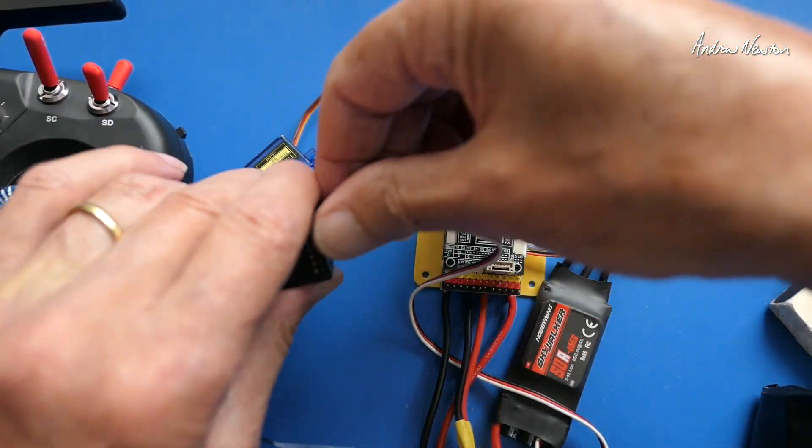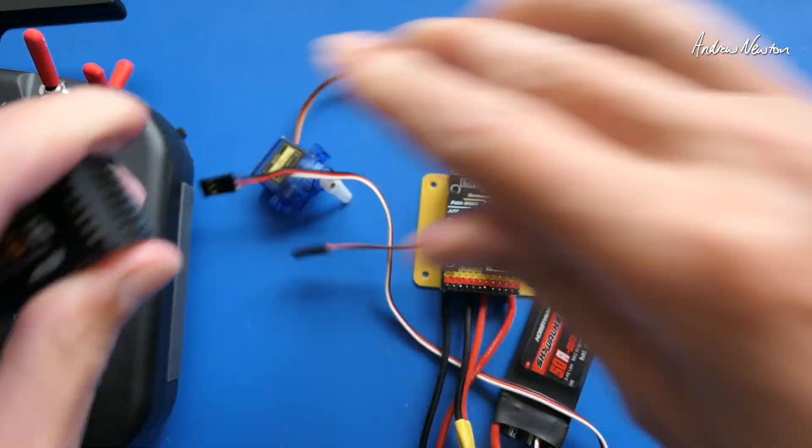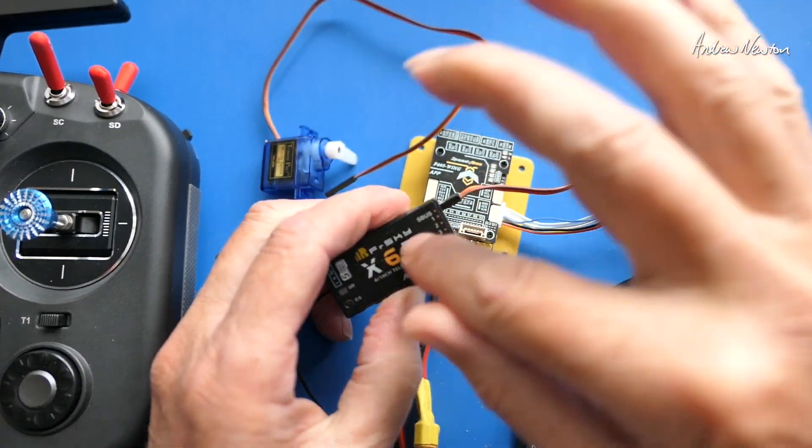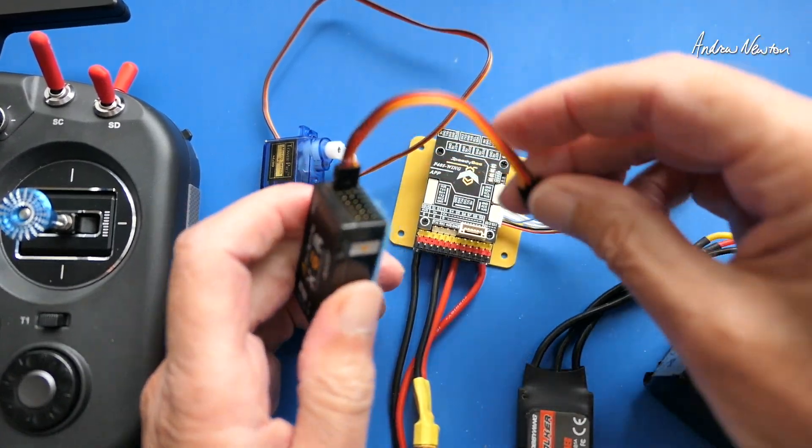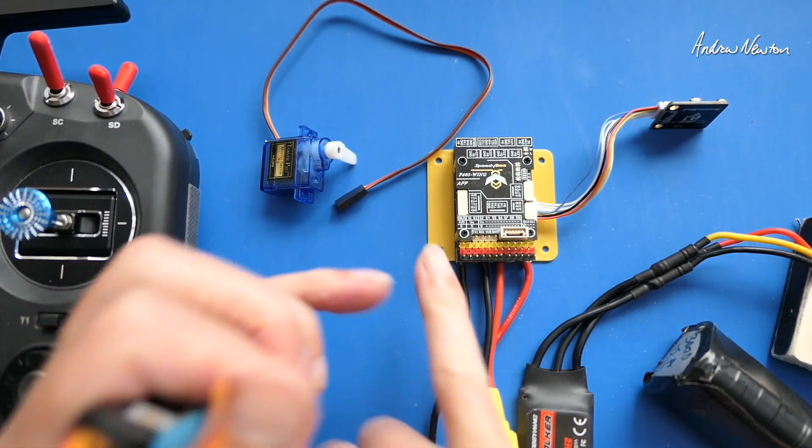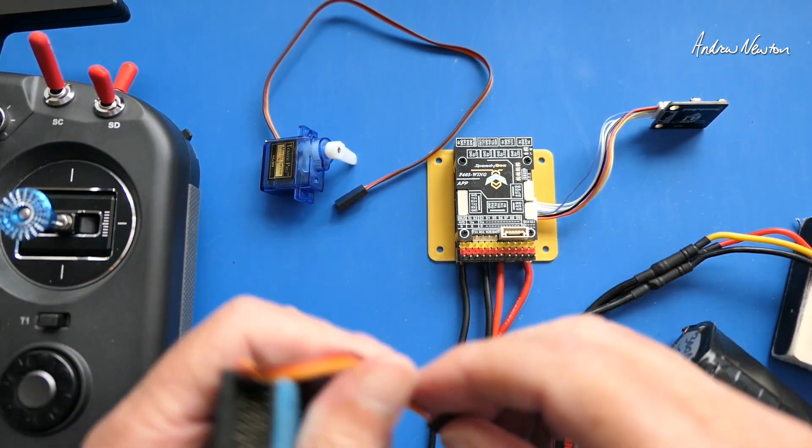So we'll unplug these and connect the SBUS connection. So that's all channels going down one cable and that will connect into the SBUS pins on the flight control board, which is these first set of pins here.